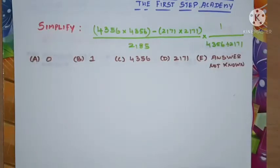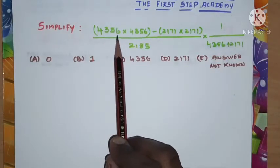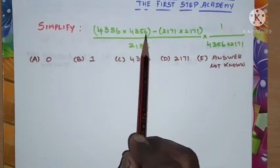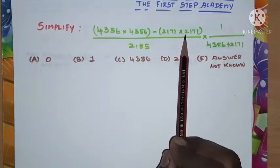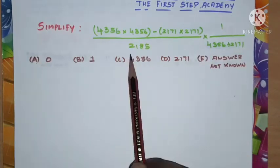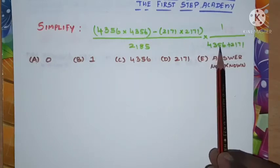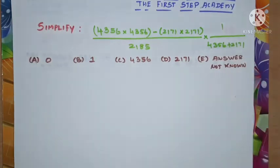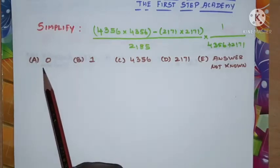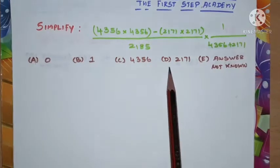The given problem is: simplify (4356 × 4356) - (2171 × 2171) divided by 2185 × 1 divided by 4356 + 2171. Given options are: option A: 0, option B: 1, option C: 4356, option D: 2171, option E: answer not known.